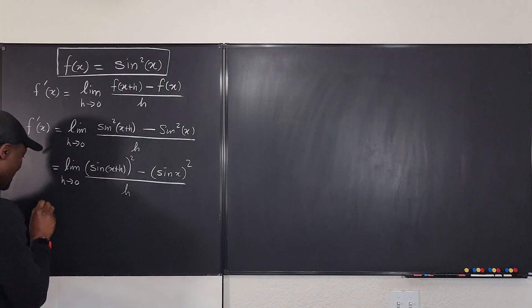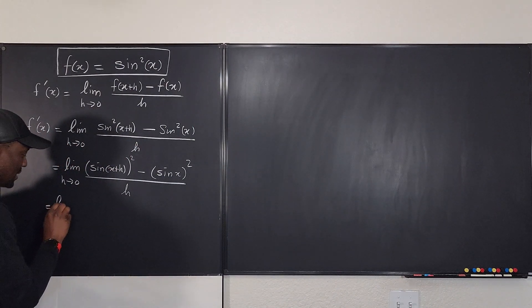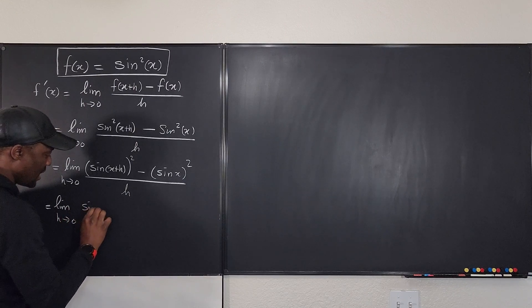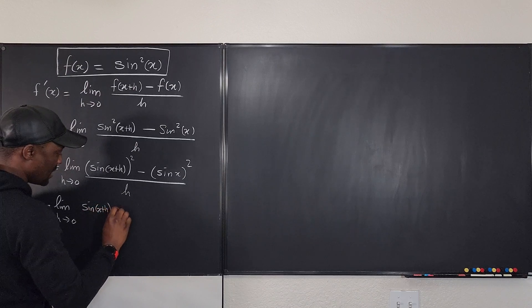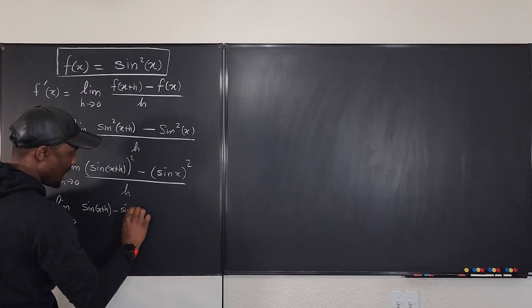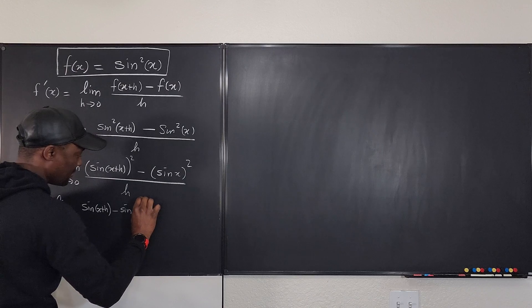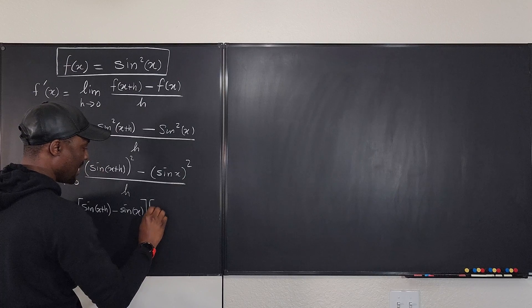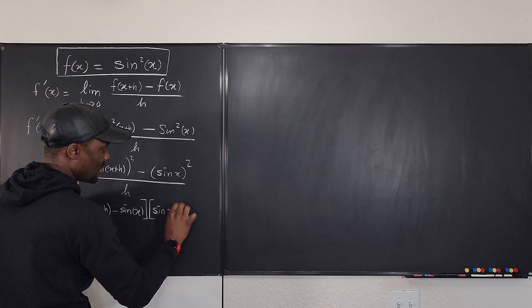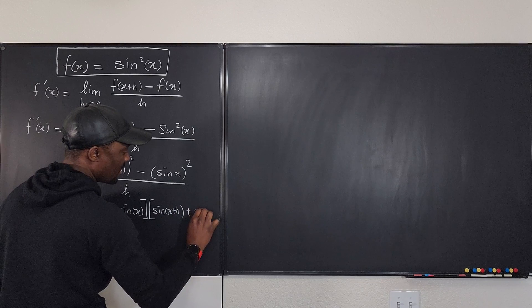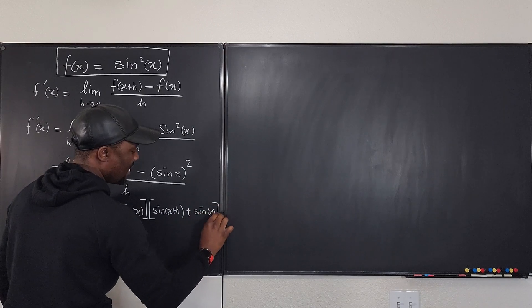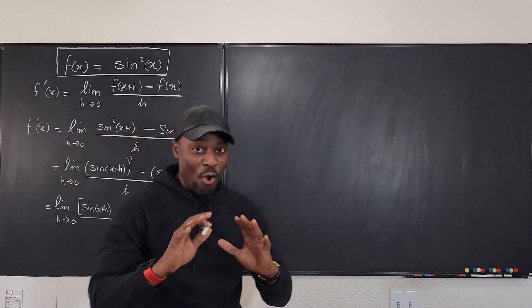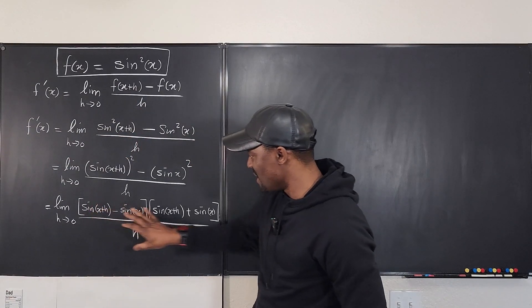So we're going to say that this is equal to the limit as h goes to 0 of sine(x+h) minus sine x, times sine(x+h) plus sine x, all divided by h.